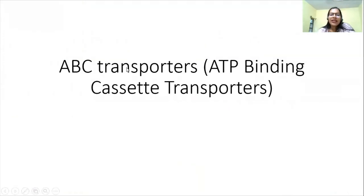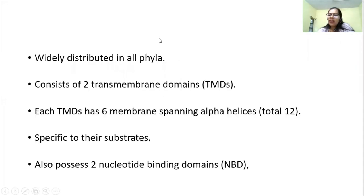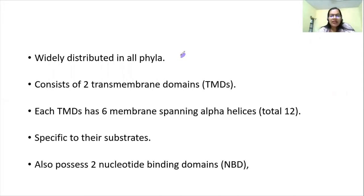ABC stands for ATP Binding Cassette transporters. They are widely distributed in all phyla — meaning they are present in all eukaryotes and prokaryotes — essentially in every living organism. So ABC transporters are found almost everywhere.